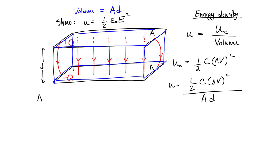We've shown previously that the potential difference in a uniform electric field along an axis parallel to the electric field is equal to minus the magnitude of the electric field times the distance. This gives us the potential difference between the upper plate and the lower plate, where the lower plate is held at lower potential — zero if we want — and the upper plate is at higher potential. And for a parallel plate capacitor, the capacitance is equal to the permittivity of free space times the area of a plate divided by the separation distance.